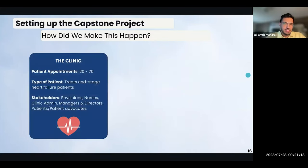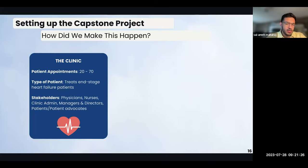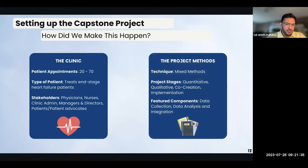Moving on to the methods section, this project was carried out in the heart function clinic at Toronto General Hospital, which treats anywhere from 20 to 70 advanced end-stage heart failure patients daily. Our participants comprised five stakeholder categories, including physicians, nurses, administrative staff, managers and directors, and patient advocates. Our project was a mixed methods approach separated into four stages: quantitative, qualitative, co-creation, and intervention implementation. Each stage comprised a data collection phase as well as a data analysis and integration phase.